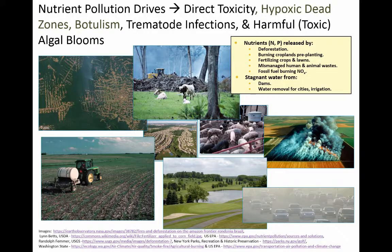Nutrients, especially nitrogen and phosphorus, are drivers of problems in aquatic ecosystems. Nitrate, for example, is directly toxic — it can cause methemoglobin production and can also be an endocrine disruptor. When these nutrients build up, they can cause the hypoxic dead zones we mentioned. In dead zones, there can also be problems with botulism. Where there is excess periphyton with sufficient oxygen, you can get more snails, and therefore more trematode infections, since snails are the intermediate host where asexual reproduction of trematode parasites occurs. And of course, there are the toxic algal blooms.